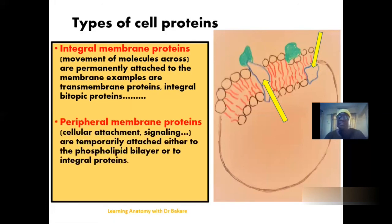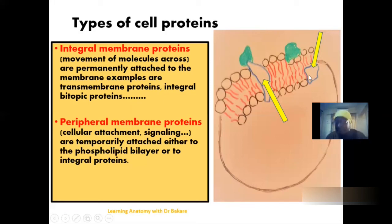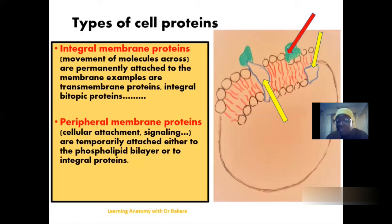The second type of cell membrane proteins are the peripheral membrane proteins, which are basically involved in cell signaling or cellular attachment. These proteins are temporarily attached to the cell membrane, unlike the integral membrane proteins which are permanent. You can see them at the peripheral region, and they may also be seen attached to integral membrane proteins like the transmembrane proteins.